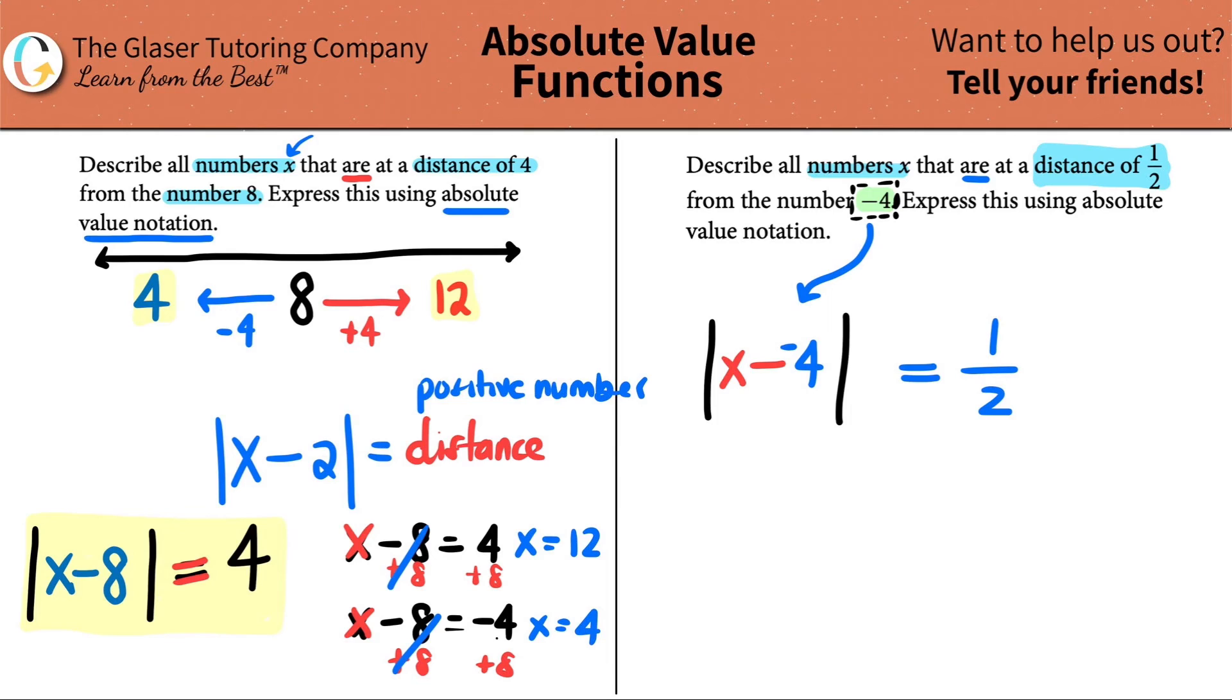And now the number that they told us was a negative four. Clean this up, right? We never want to say minus a negative. So it would be the absolute value of x, keep, change, change. So plus four is equal to one half. And once we know the idea and how to actually write it in absolute value notation, look how easy that was. And that's the answer.